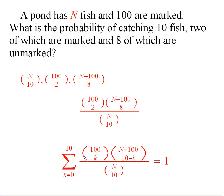What this sum says is that if you add up the probabilities of these outcomes, you have to get 1 because these are all of the possibilities that could occur, k equal to 0 up to k equal to 10. Because if you have only 10 marked fish, you can't pick out more than 10 marked fish.